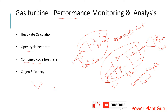Additionally, if you want to look at just the GT plus HRSG portion, you calculate your cogen efficiency. This gives you a performance monitoring index for the GT plus HRSG together. These are the different indices or KPIs which you need to monitor.